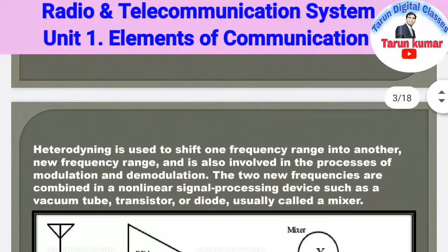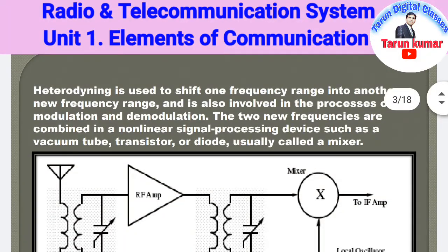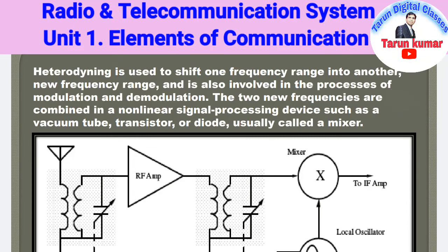Heterodyne is used to shift one frequency range into another new frequency range. If we have one frequency and we want to shift it to another level or another mode, then we use the heterodyne process. It is a technique for shifting a frequency from one range to another range.